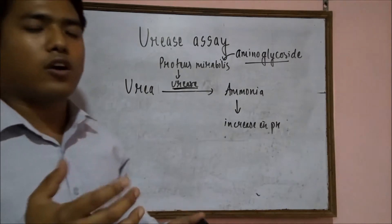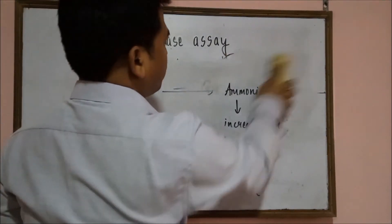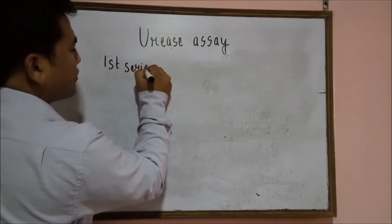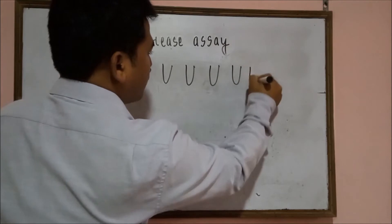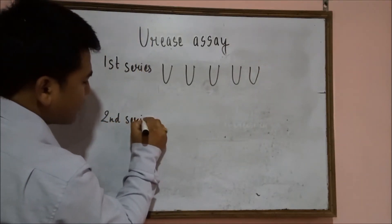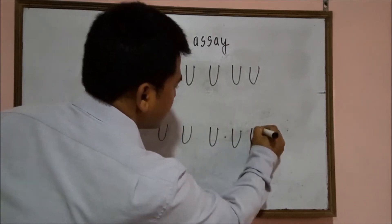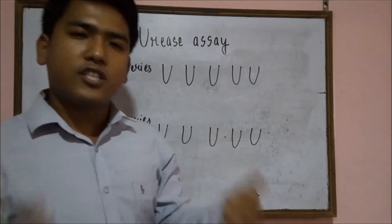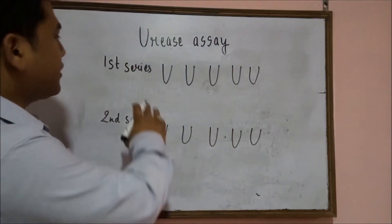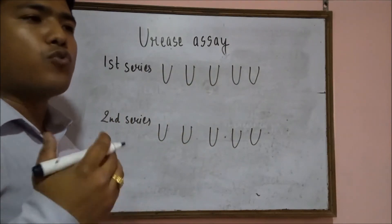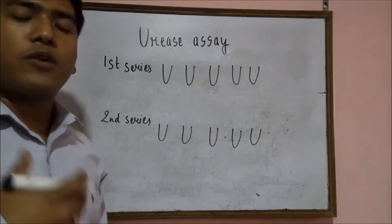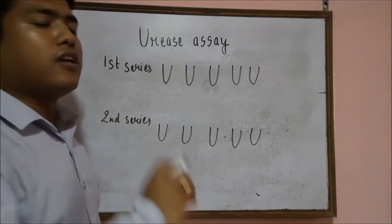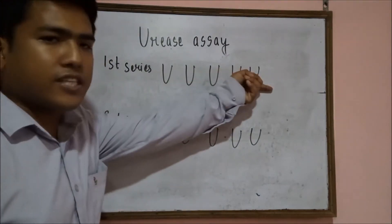Now let me explain how the urease test is performed. First, we take two series of test tubes — a first series and a second series. In the first series I have taken about five test tubes, but you can take according to your needs. You have to add the calibrator, which contains known concentrations of the antibiotics, into both the first series and the second series. Note that the concentrations should be in increasing order.